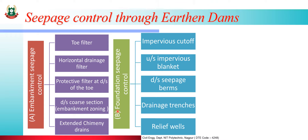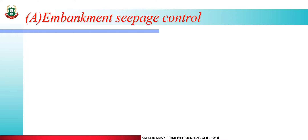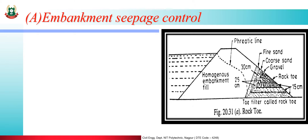Foundation seepage control means seepage under the foundation. Embankment seepage control can be subdivided as: toe filter, horizontal drainage filter, protective filter at downstream of the toe, downstream coarse section, and extended chimney drains. Foundation seepage control methods include: impervious cutoff, upstream impervious blanket, downstream seepage berms, drainage trenches, and relief wells.